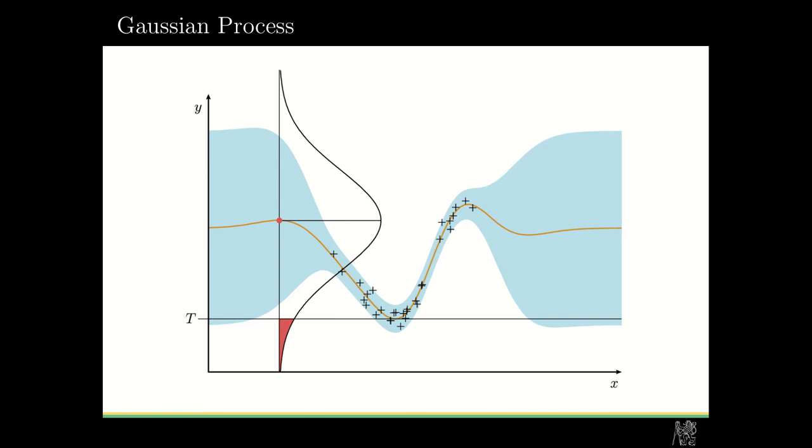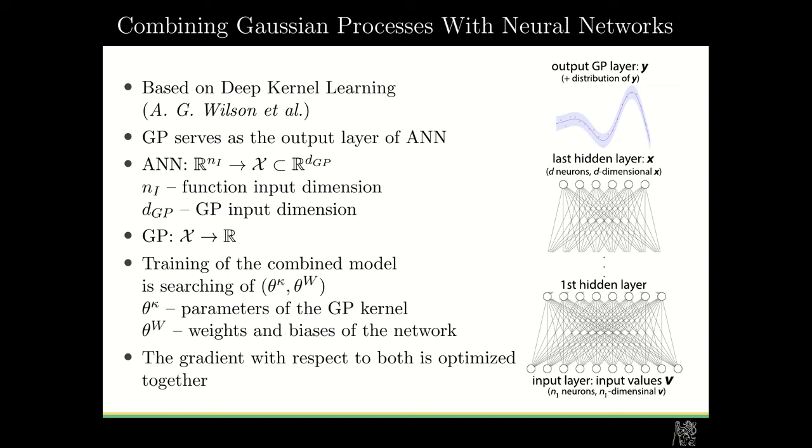So we use the combination of Gaussian processes with neural networks. This is based on the paper called Deep Kernel Learning proposed by Andrew Wilson. Here the Gaussian process can be seen as an output layer of a neural network. The neural network computes a mapping from the input dimension to the subset of space of dimension d, and the Gaussian process then creates mapping from this subset to real numbers.